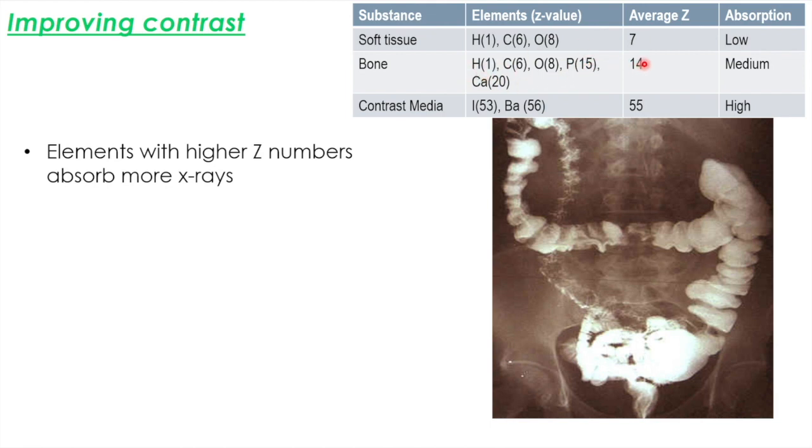Bone has a couple of other elements in there, and it has a higher average z-number of 14. So you can see because it has a higher z-number, that's why bones show up on an x-ray. There's a difference between these two, so we get a contrast.